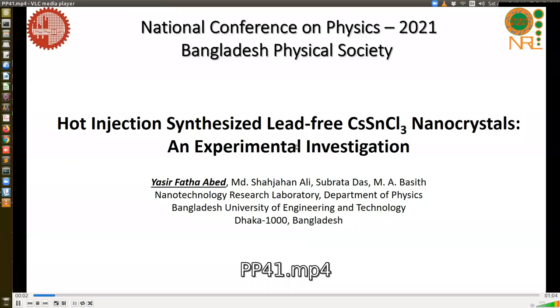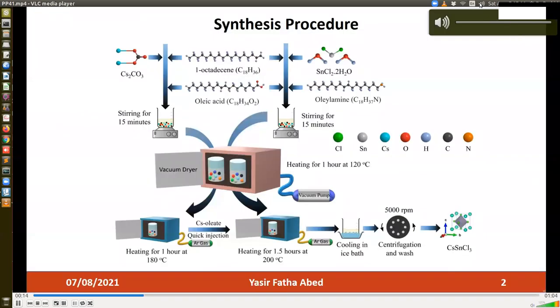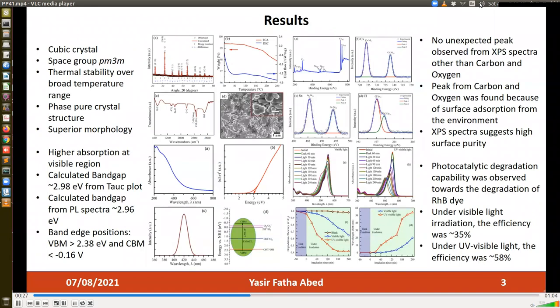In this investigation, we have synthesized the cesium-tin chloride perovskite nanocrystals via the hot injection method and investigated its optical and photocatalytic properties. From the experimental investigation, we confirmed that the crystal is cubic with a space group of PM3M and has higher thermal stability with superior surface morphology. The perovskite nanocrystals had surface purity confirmed by the XPS spectra and has higher absorption at the visible range. The band gap is 2.98 eV and band edge positions supported the photocatalytic capability, which we investigated later and found highest 58% efficiency under UV-visible light irradiation towards the degradation of rhodamine B dye.